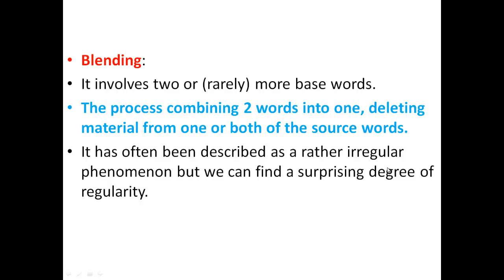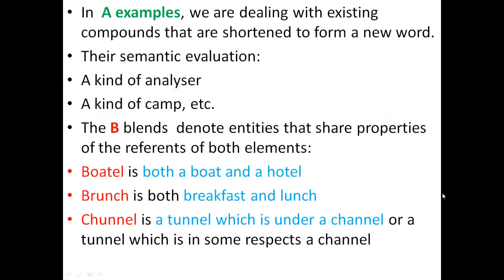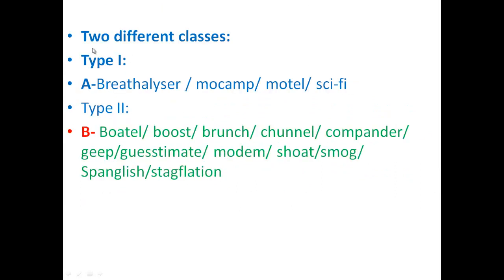Welcome to this fourth part of morphology. The next item we are going to explain is blending. Blending involves two or more base words — it's the process of combining two words into one by deleting material from one or both of the source words. It has often been described as a rather irregular phenomenon, but we can find a surprising degree of regularity.